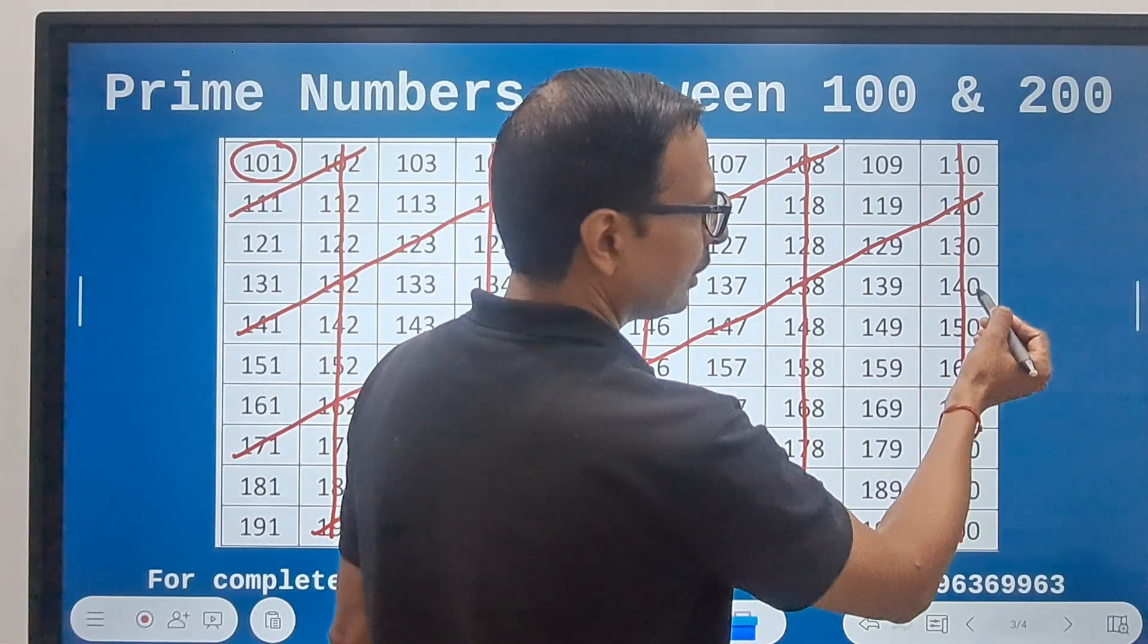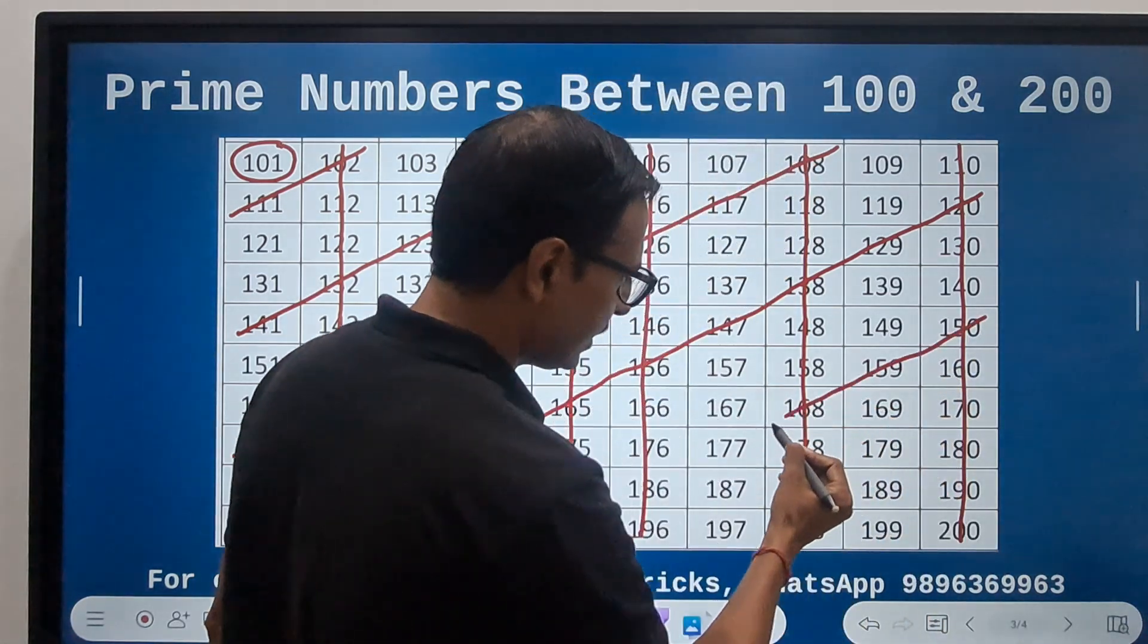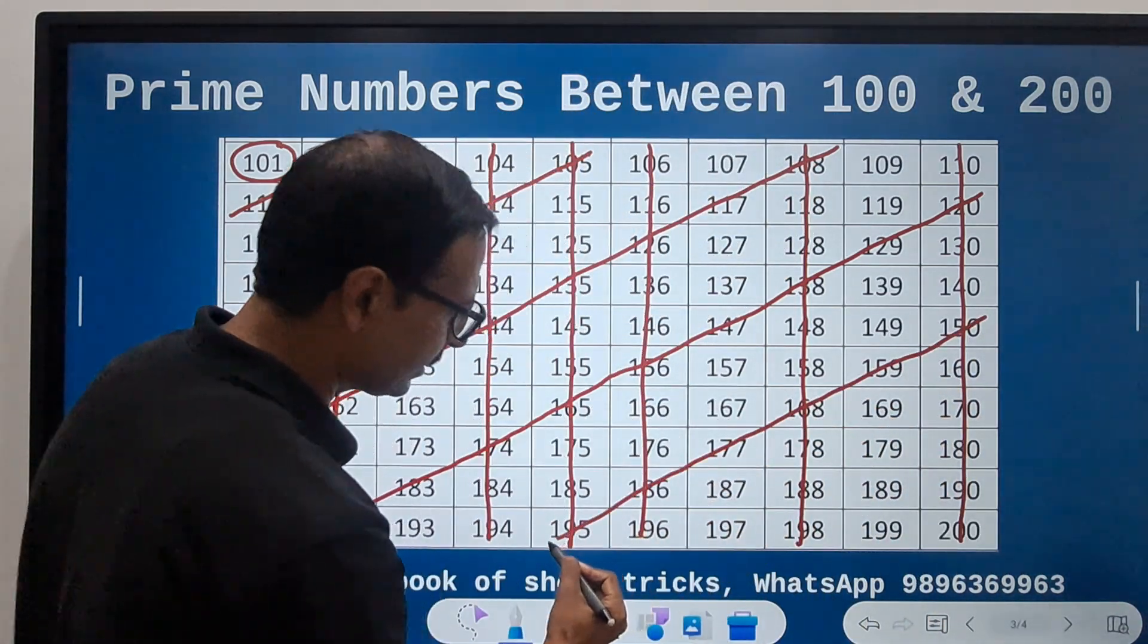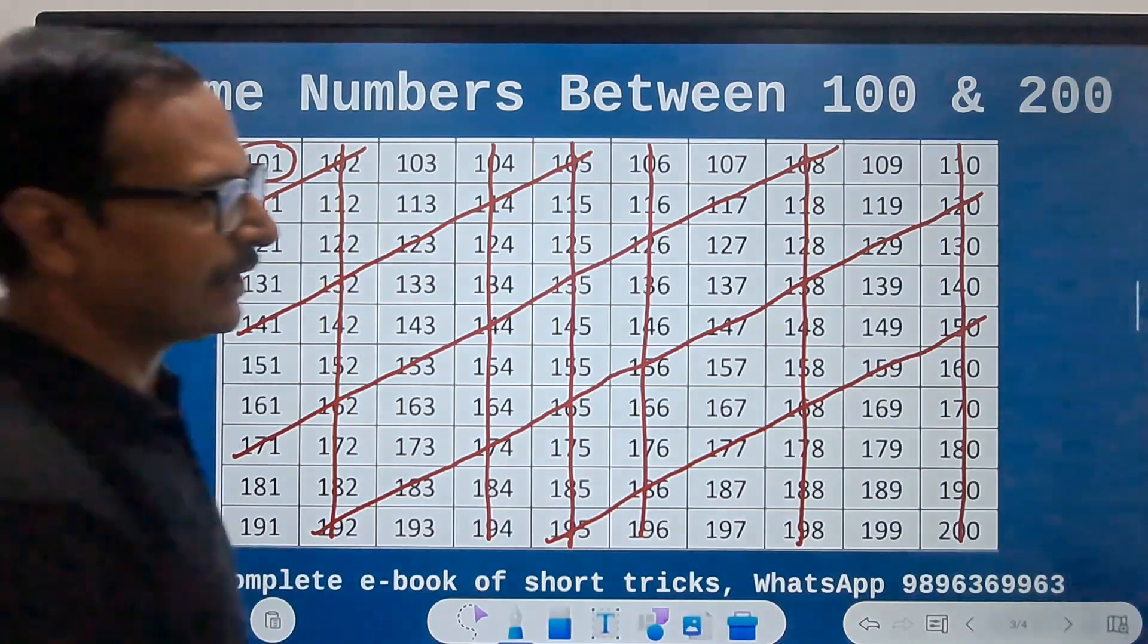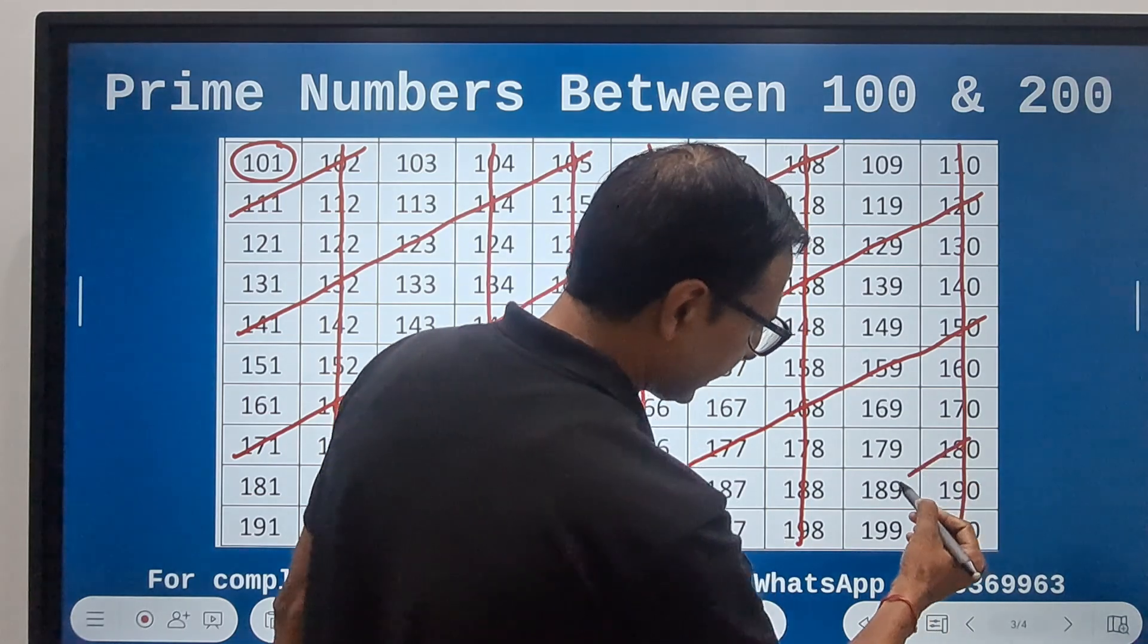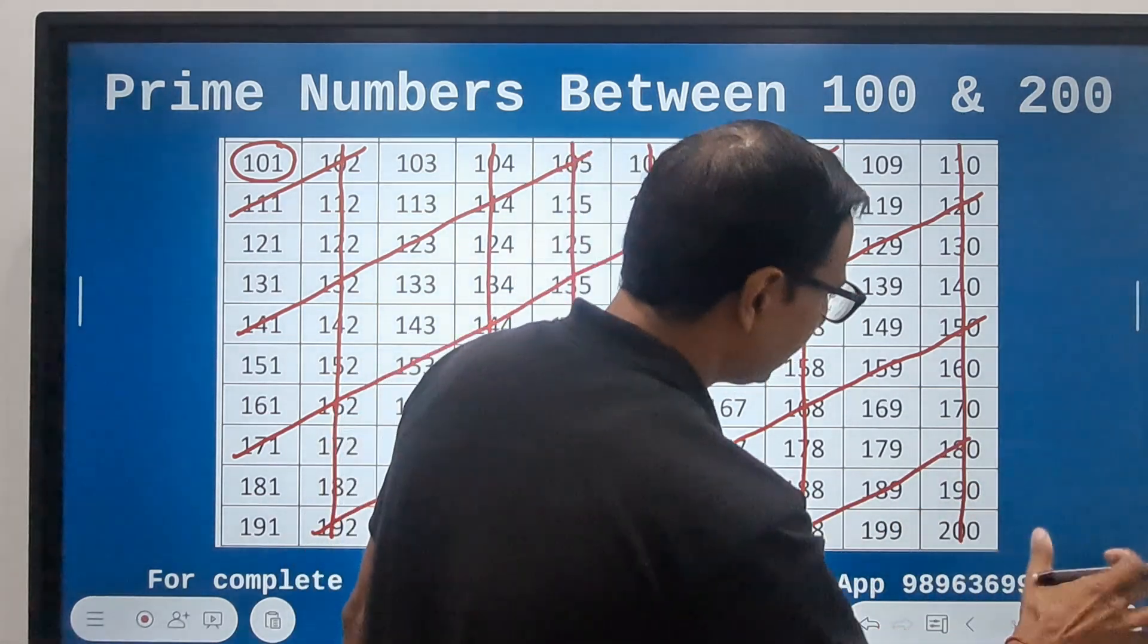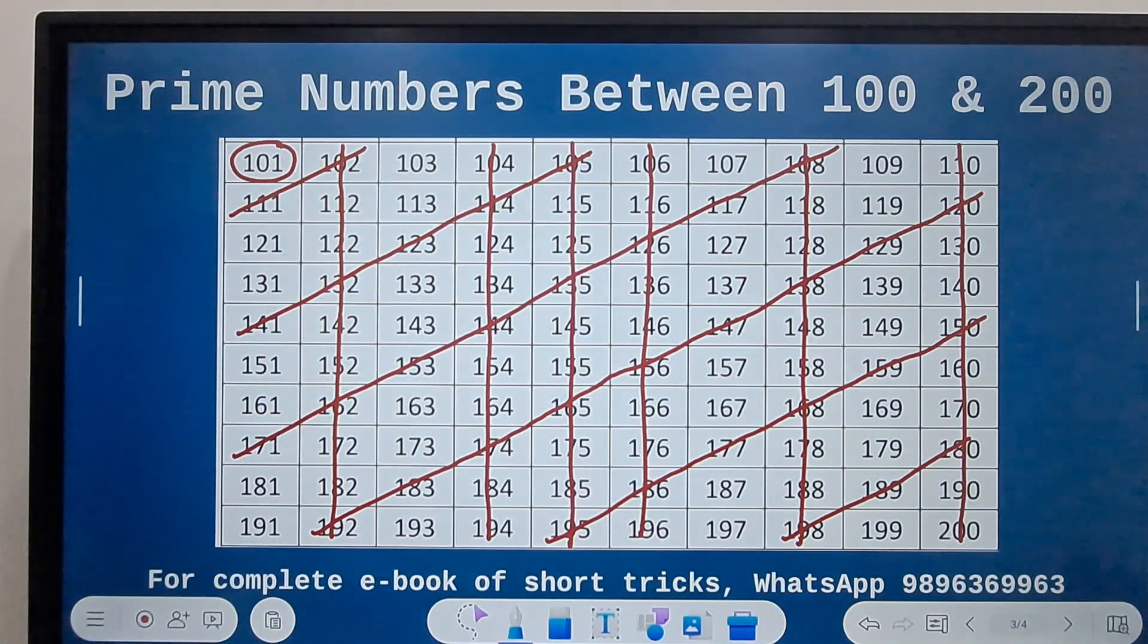And finally leave two more and move on to 150. So 150, the entire diagonal is ruled out. And finally leave two more and 180, so another diagonal. Now we have two more, but we don't have anything after this, so we can terminate this process here.